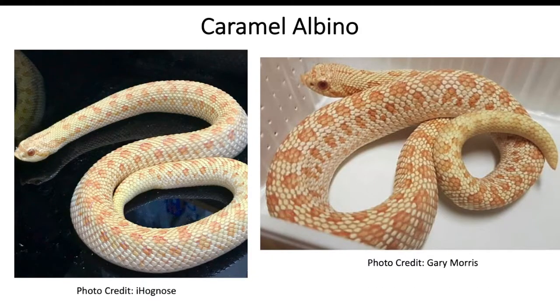Now we're going to do our first combination of the caramel gene with another recessive gene. This is the caramel albino, also known as the ultramel, and these are two good examples of them.